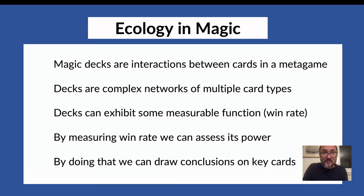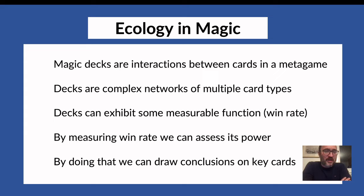Magic decks are interactions between cards in a metagame — just replace cards for species and metagame for ecosystem and you have basically the same definition. Decks are complex networks of multiple card types; some cards are synergistic, some are pockets of synergy, some synergistic across a wider spectrum, and some cards actually don't work well together.